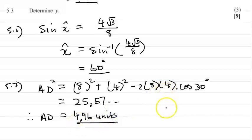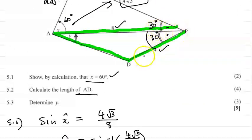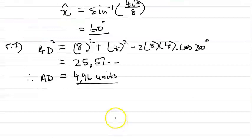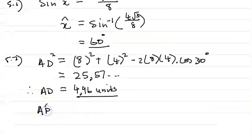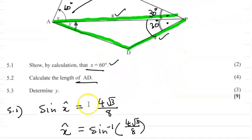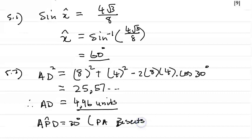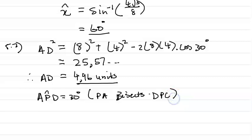A slight omission: I need to justify why angle APD equals 30 degrees. APD equals 30 degrees because PA bisects DPC — that statement should have come first. So that is the answer using the cosine rule: 5.1 used trig ratios in a right angle triangle, and 5.2 used the cosine rule with two sides and an included angle.